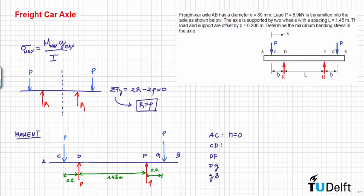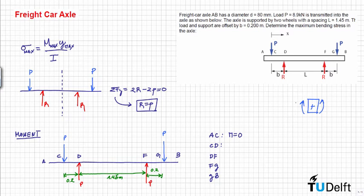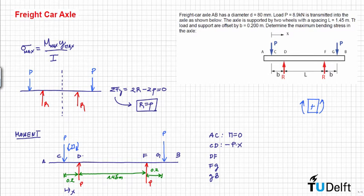For section CD, force P is creating a counterclockwise moment, so the internal reaction moment is clockwise. According to our sign convention this is negative, so the moment distribution is equal to minus P times X, where X is defined from C to the right.